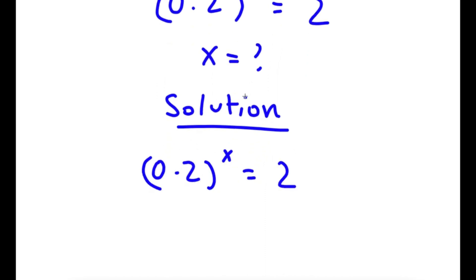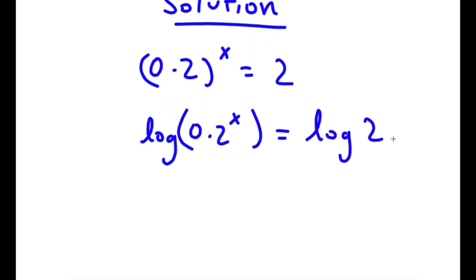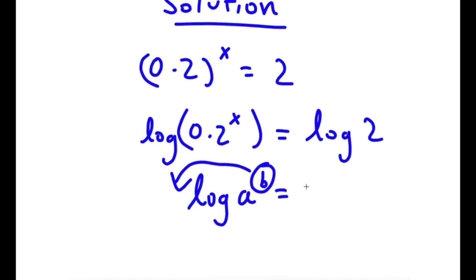I'm going to take the log on both sides. So I have log 0.2 to the power of x is equal to log 2. And if I have something in the form log a to the power of b, I can move this exponent b to the front, so this equals b times log a.